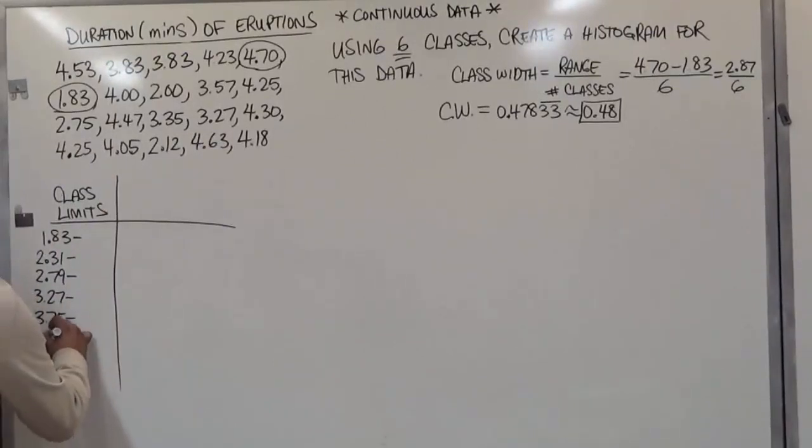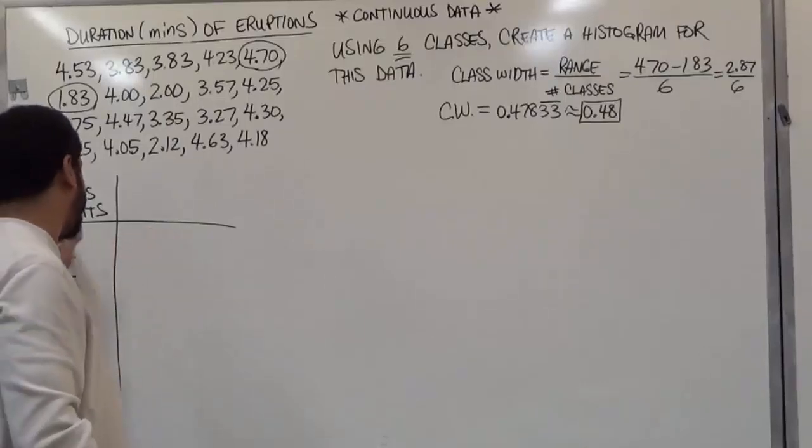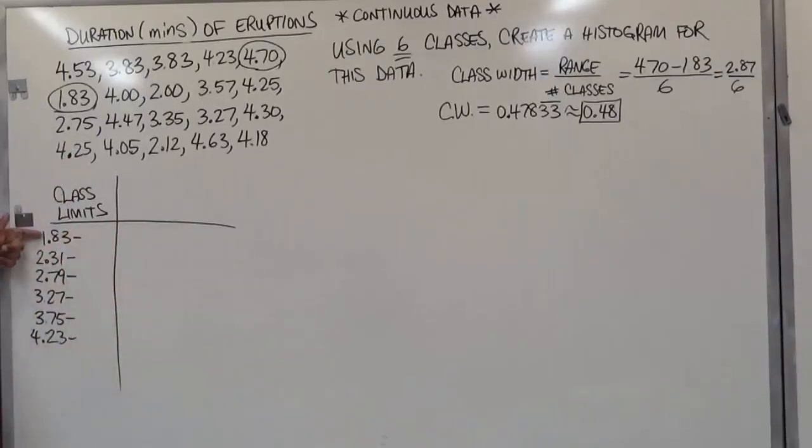Now again, be careful when you're adding this, because remember, the class width has to have the value of 0.48 going horizontally. And vertically, you're just adding that class width going downwards.